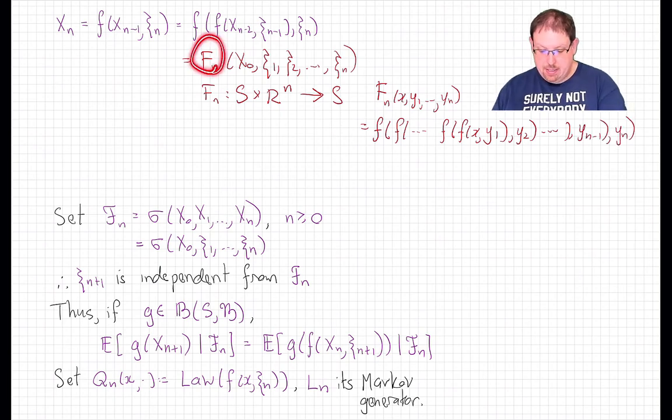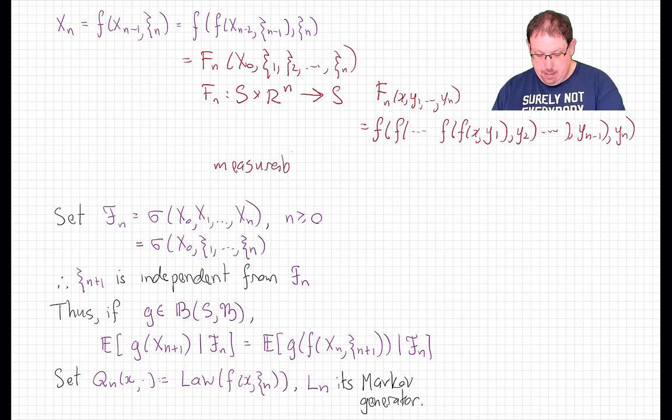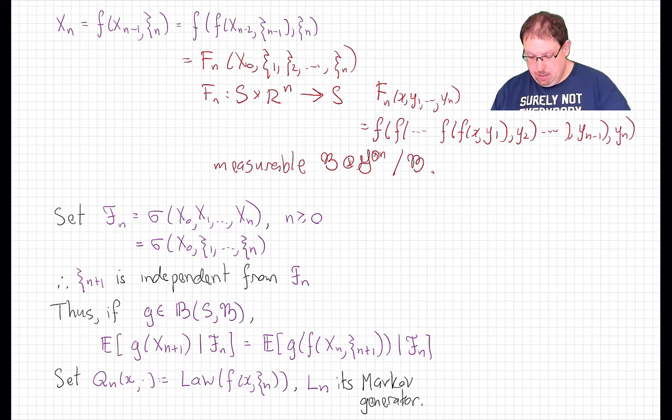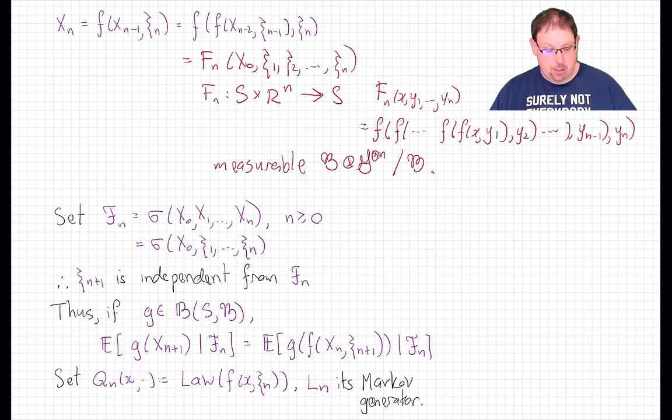So that's our function that's mediating the dynamics in an increasing number of variables, if you like. And the thing that I want you to note about this is that this capital F_n is a measurable function of the product sigma field B × G^n into B.